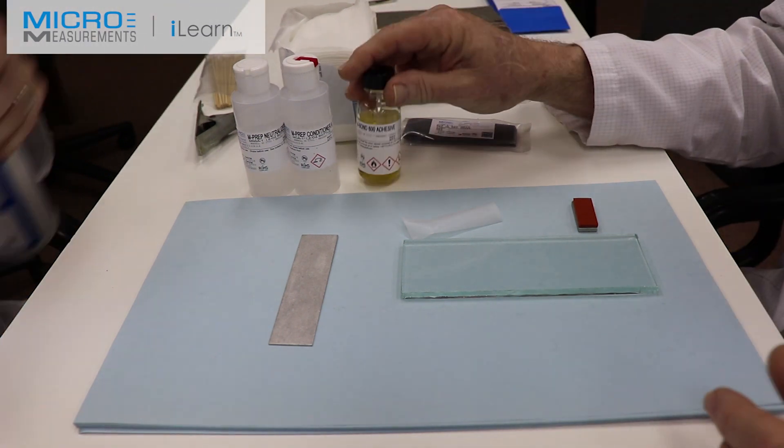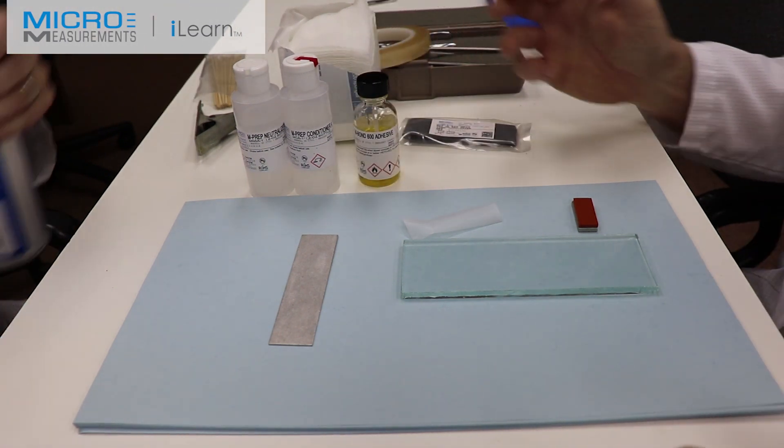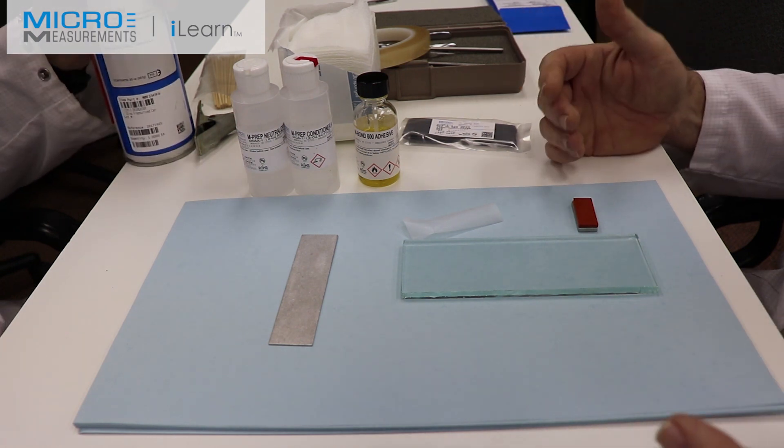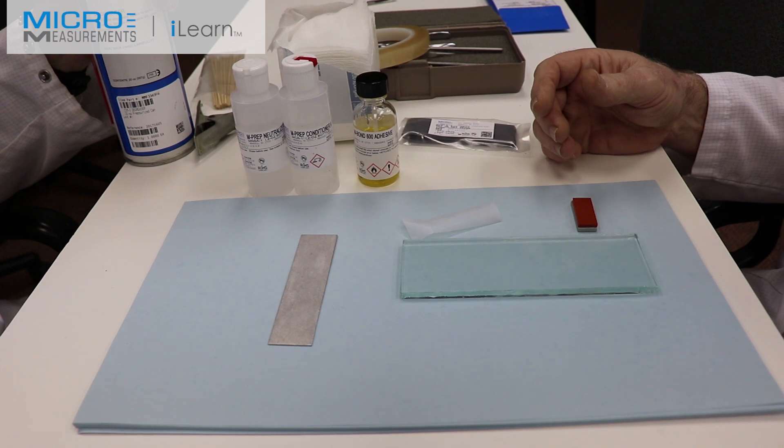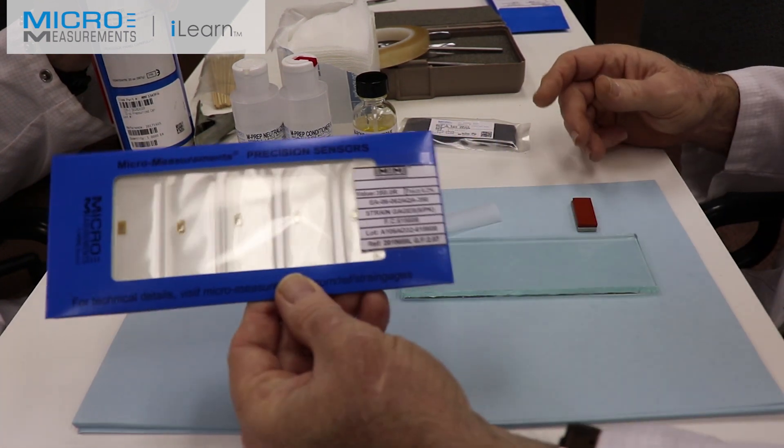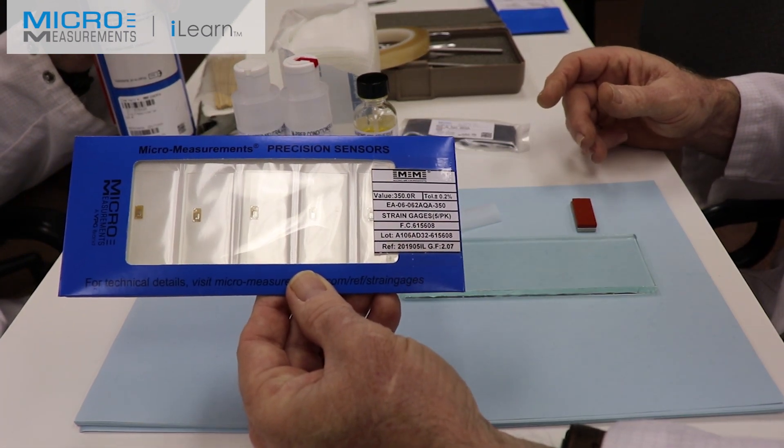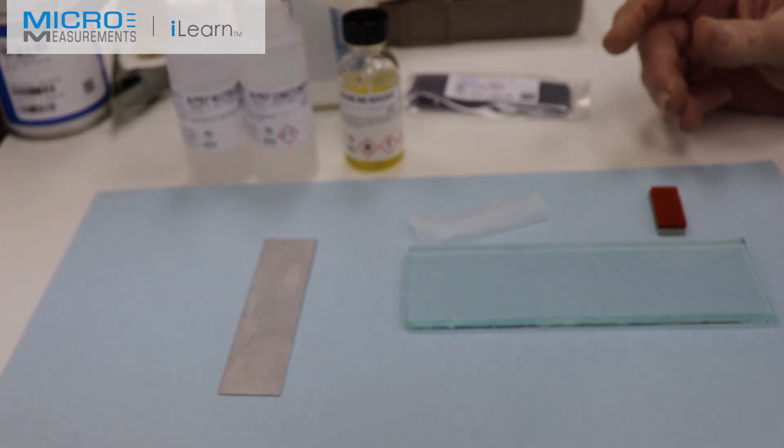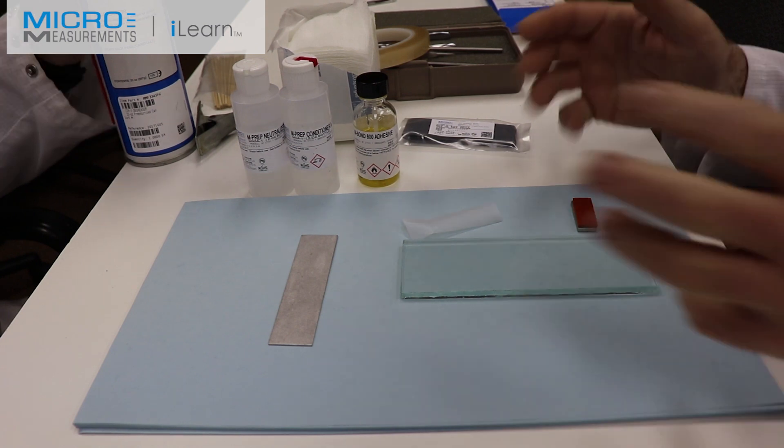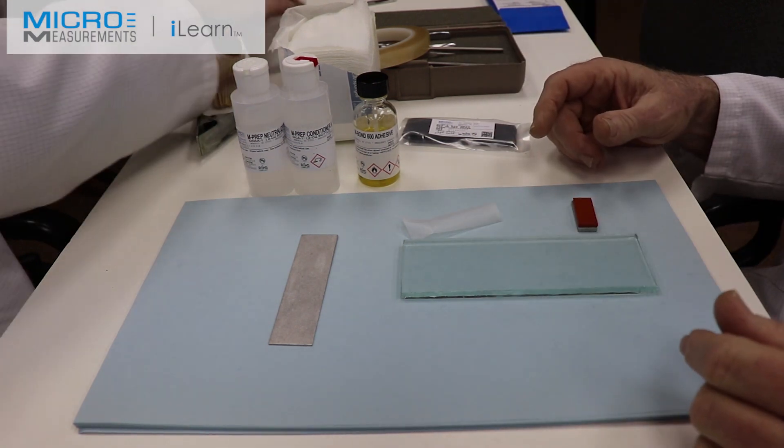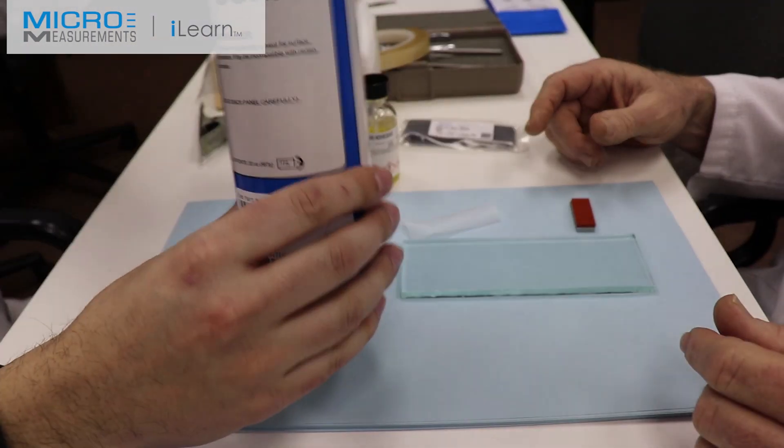Now the M-Bond 600 is typically used in solvent thinned applications where a bond line of thin and hard and repeatable is necessary. We're going to be using an advanced sensor type strain gauge, a transducer class gauge for this application. So Colin, first thing we got to do is get rid of the degrease or any contaminants on there. So we're going to degrease it with the CSM3.